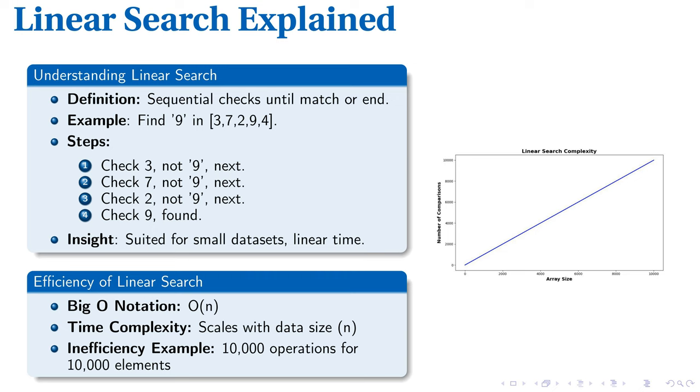Linear search operates with a time complexity of O(n), indicating the amount of time it takes the algorithm to complete increases linearly with the input size. Searching an array of 10,000 elements, for instance, would require 10,000 operations. Although straightforward, linear search is primarily effective on smaller datasets, as performance declines with data growth.